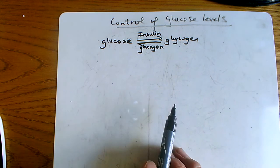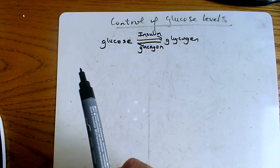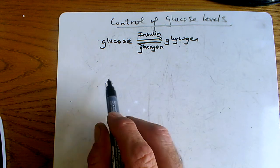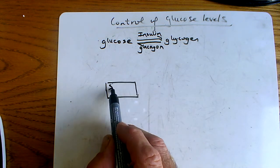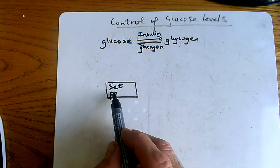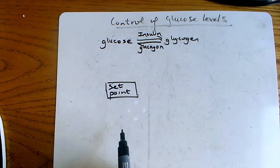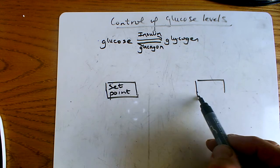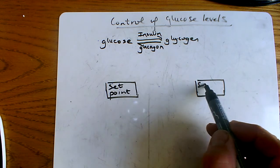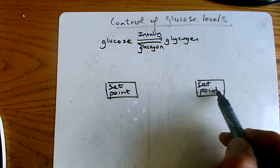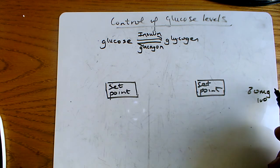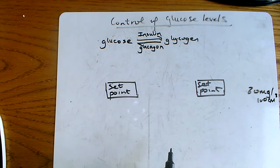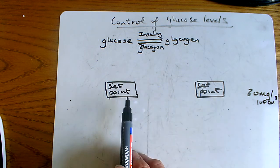Okay, so what we're talking about here is control of glucose levels. You have in your body a set point, a set amount of glucose, and it's about 18 milligrams per 100 centimeters cubed of blood. So this is your set point of glucose.